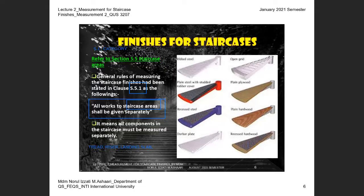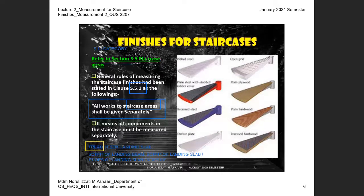Staircase areas include: tread, riser, landing slab, landing beam, edges of landing slab, and sides of landing beam — all measured separately. This is what the SMM clause means by 'separately.' The right-hand side of the slide shows different materials that can be applied to a staircase: hardwood, plain hardwood, open grid, steel plate, glass, and so on.